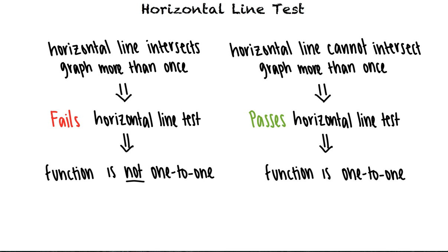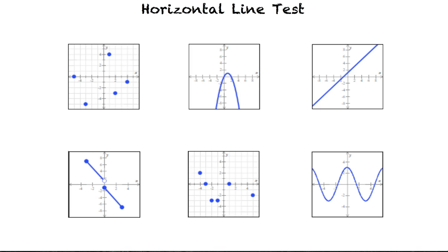Let's take a look at a couple examples. For each of the functions shown graphed, we want to state whether it is 1 to 1. For the first function, this passes the horizontal line test because it's impossible to draw a horizontal line that intersects the graph more than once.